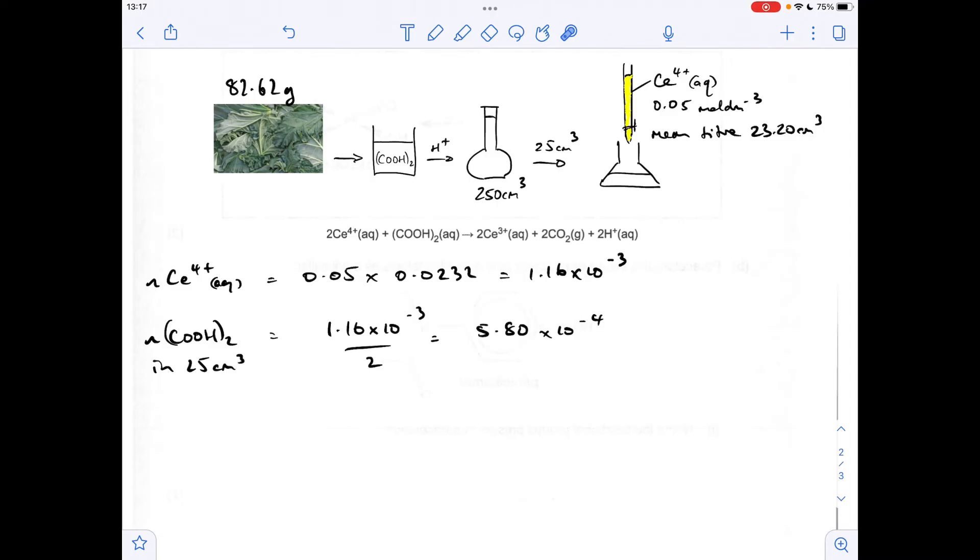We want to know how many moles of ethanedioic acid are in those leaves. So what we need to do is multiply by 10 to get the number of moles that are in the 250. They're going to be the same as what's in the beaker here, which has obviously come from the leaves. So we're just going to multiply this by 10, which is obviously 5.80 times 10 to the minus 3.